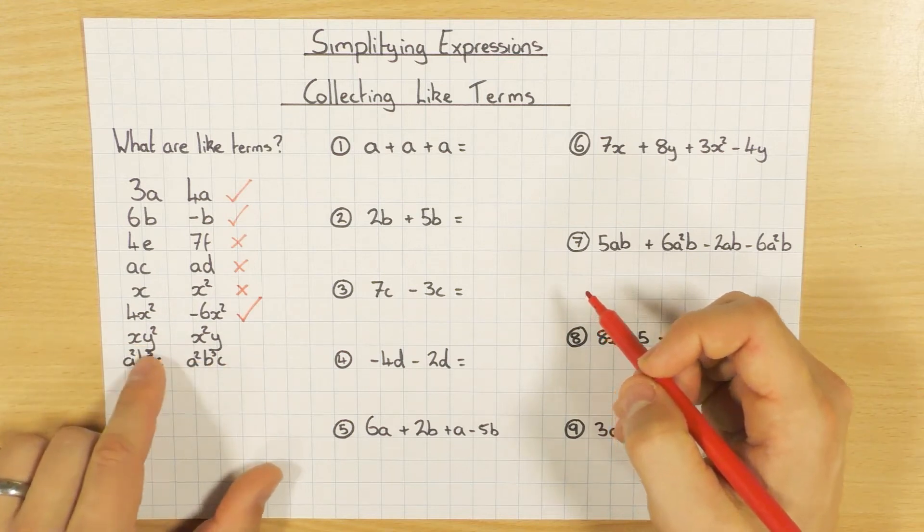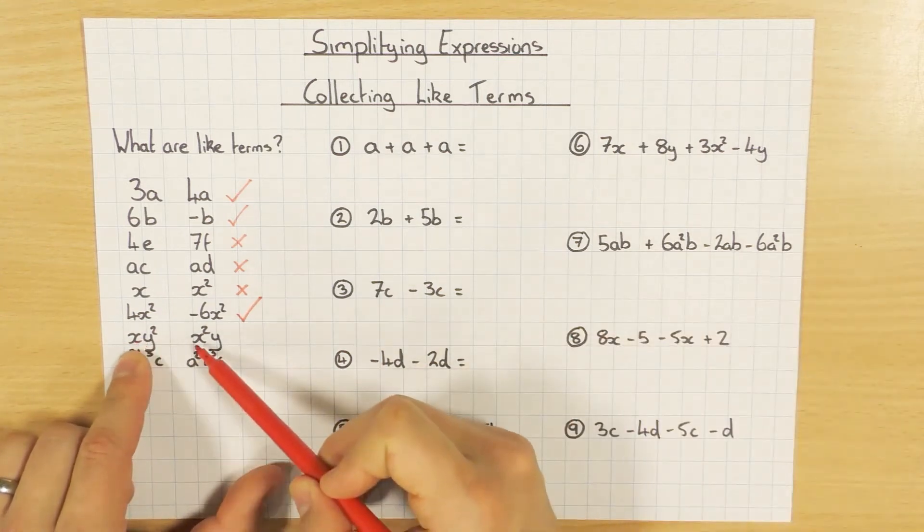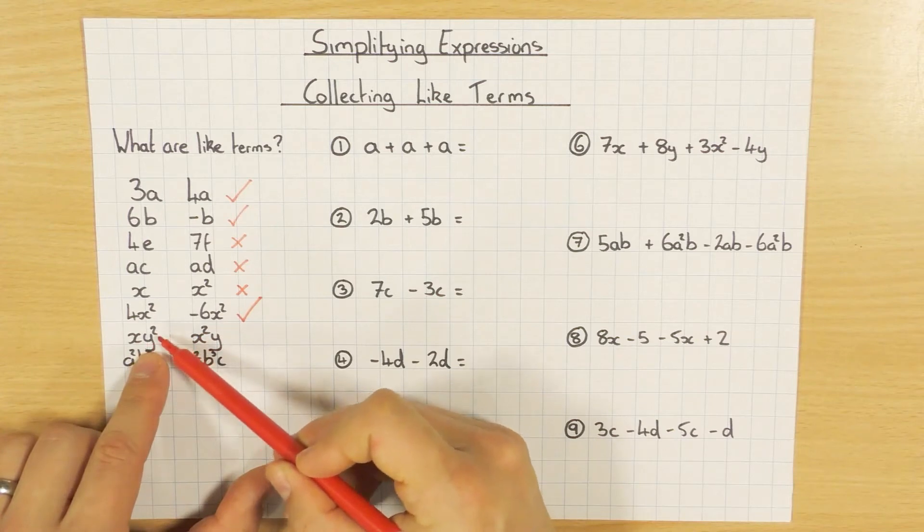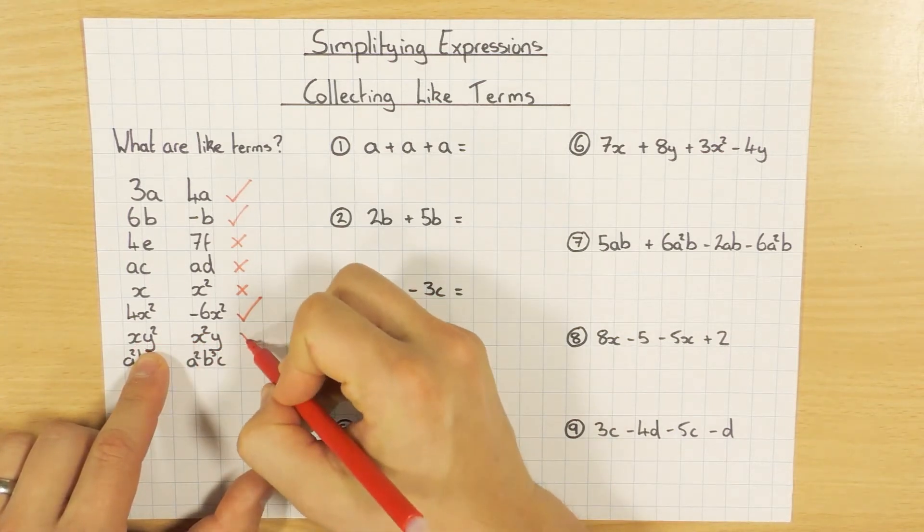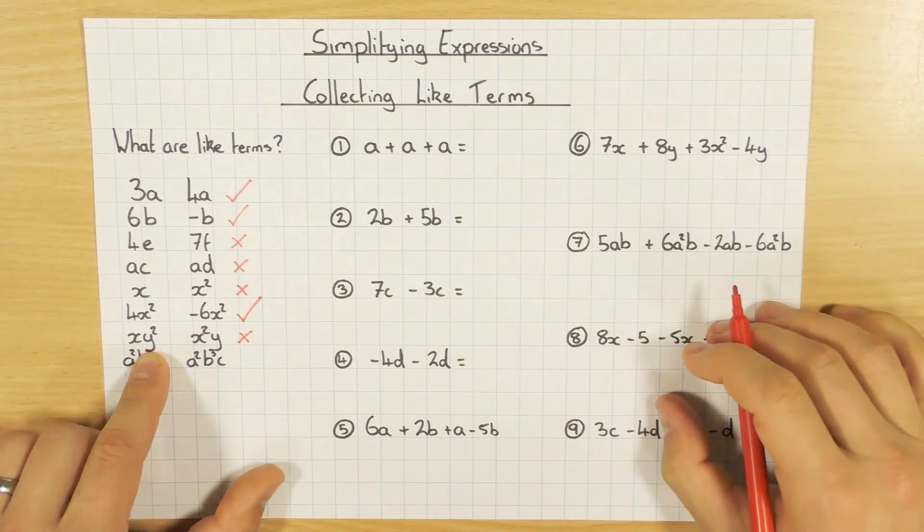This one here initially looks like it is, but I've got an X and an X squared. So they're different. And a Y squared and a Y. So actually, they are subtly different. And therefore, they are not like terms.